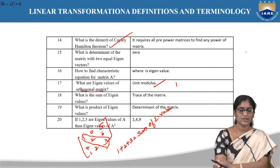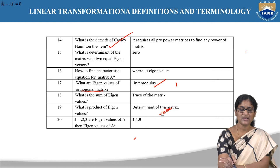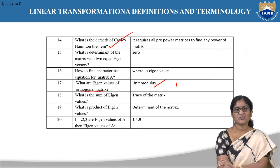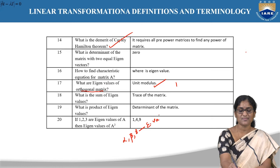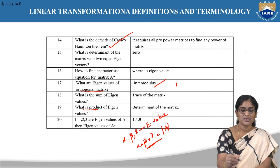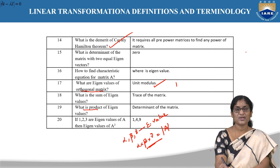What is the product of eigenvalues? The product of the eigenvalues equals the determinant of the matrix. If α, β, γ are the eigenvalues of a 3×3 matrix, then α·β·γ = det(A). This is a useful property relating eigenvalues directly to the determinant.